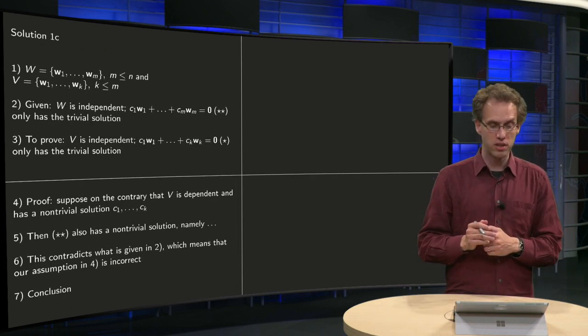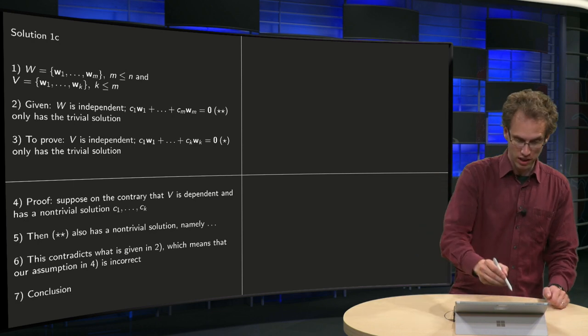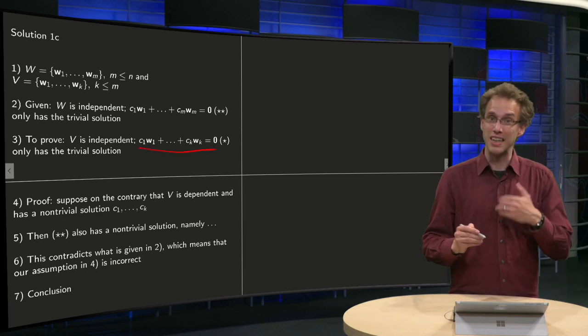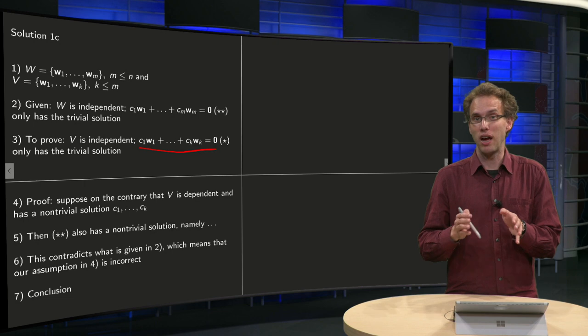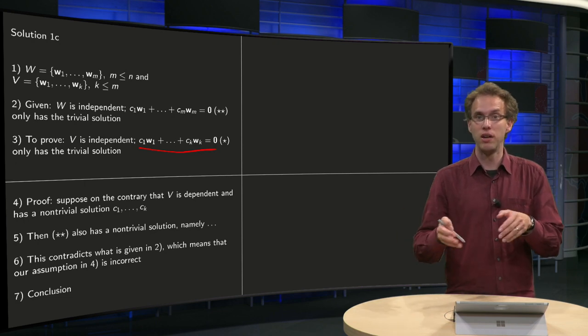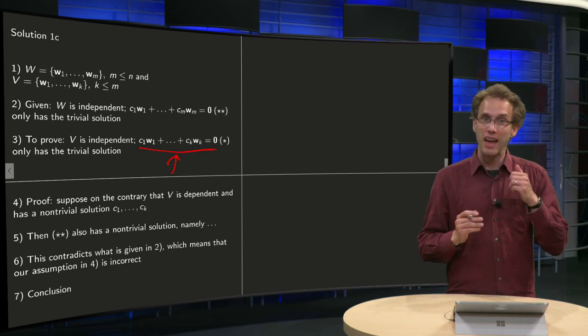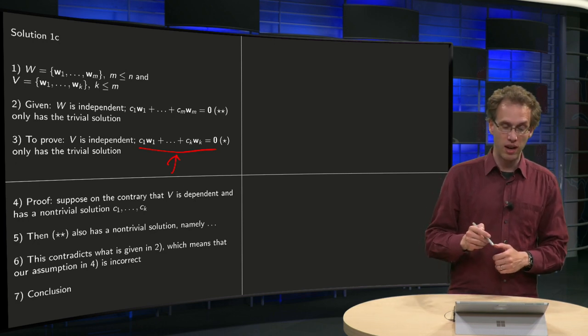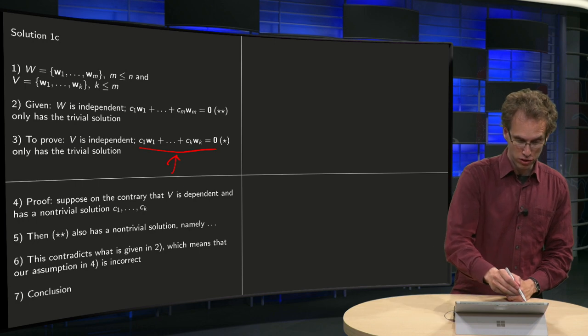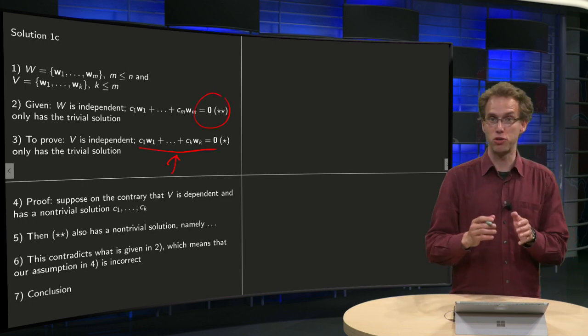how am I going to do that? Now, suppose on the contrary that this equation over here has a non-trivial solution, so we have weights c1 up to ck, which are not all zero, such that this equation over here equals zero. If you have that, then the equation double star also has a non-trivial solution, namely,